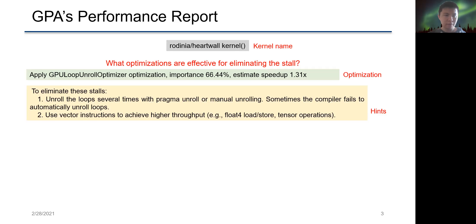For example, in this kernel, GPA suggests applying loop unrolling optimization to achieve an estimated speedup about 1.31x. It also provides a few hints regarding how to transform the code to achieve this speedup.